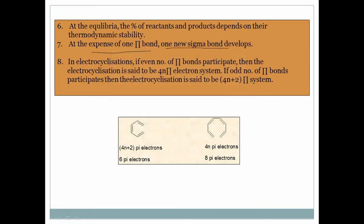In electrocyclization you have to calculate the number of pi bonds. If a molecule has three pi bonds — an odd number — the system is a 4n+2 pi system. If a molecule has four pi bonds — an even number — it is a 4n pi electron system. If the system has 4, 8, or 12 pi electrons it is a 4n electron system; if it has 2, 6, or 10 pi electrons it is a 4n+2 system.